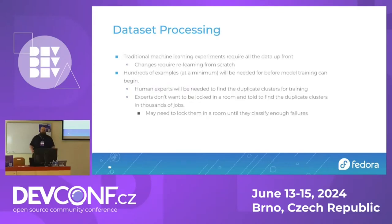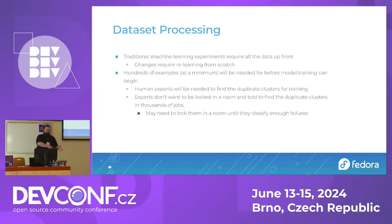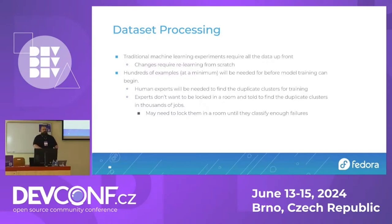This brings us to the major cost. Looking at a traditional machine learning experiment, you need to have all the data up front — everything classified, an expert has to go through it. There's a bit of counterintuitiveness: you need to solve the problem before you can figure out if you can solve the problem. If you don't have a way to evaluate it, there's no way to do the experiment.